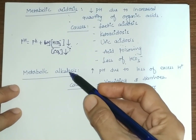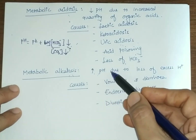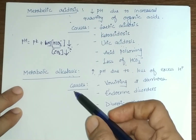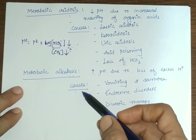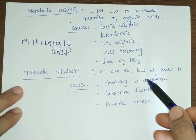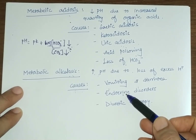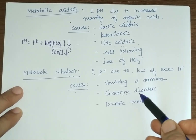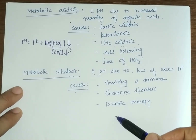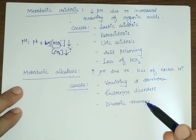In metabolic alkalosis, pH increases due to excessive loss of H+ ions. Common causes include vomiting and diarrhea in which H+ ions are lost, endocrine disorders such as Cushing syndrome and hyperaldosteronism, and diuretic therapy causing excessive loss of H+ ions.